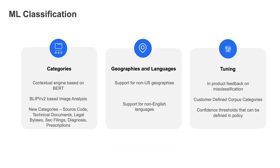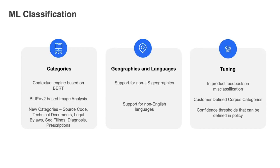We have expanded our data protection capabilities, as well as expanded the ML capabilities to support non-US geographies as well as non-English languages. Our ML classification also provides feedback — if something has been misclassified, an end user or administrator can provide feedback. You can also provide classification from a customer-defined corpus of categories, meaning you as an admin can provide a list of documents to learn from, and based on that we will provide ML classification and protection.